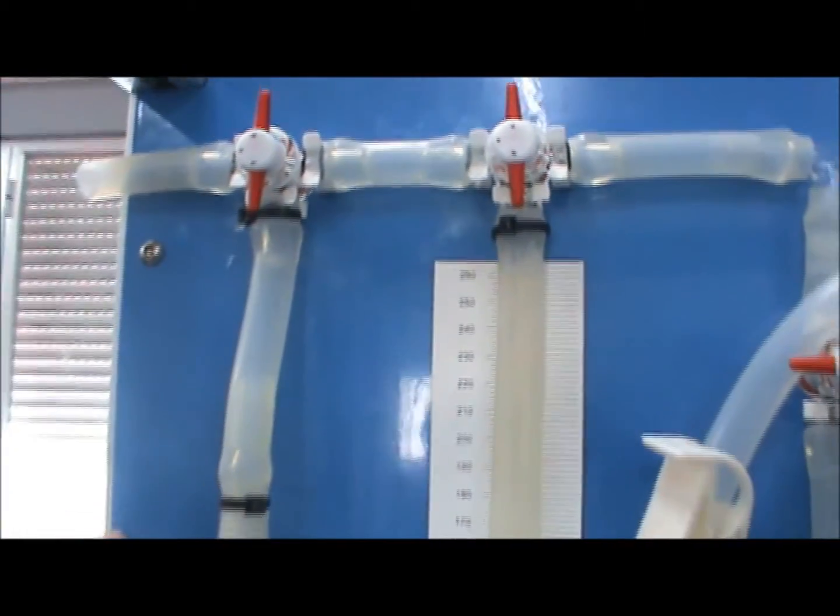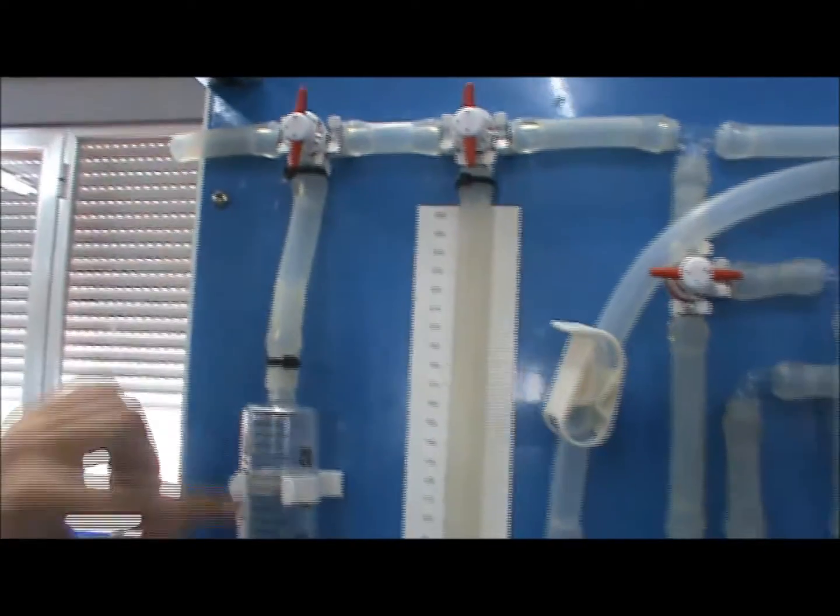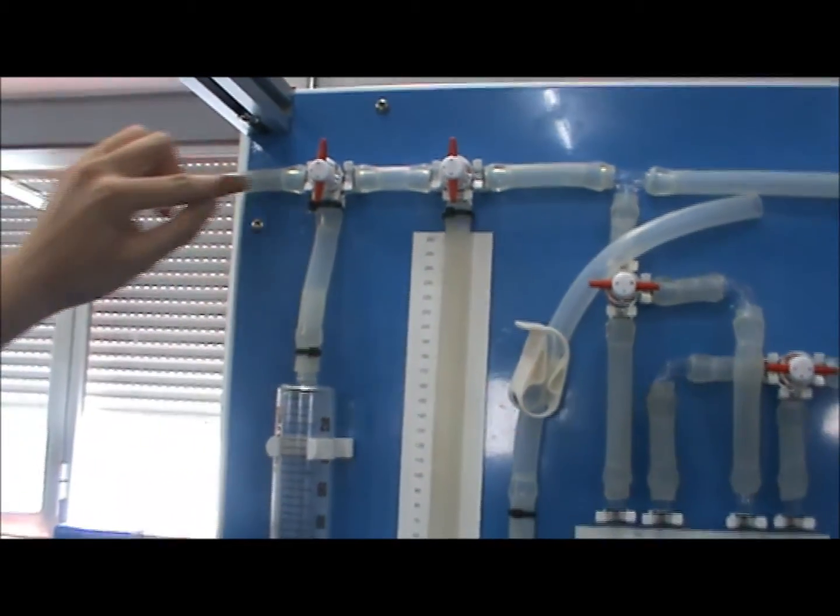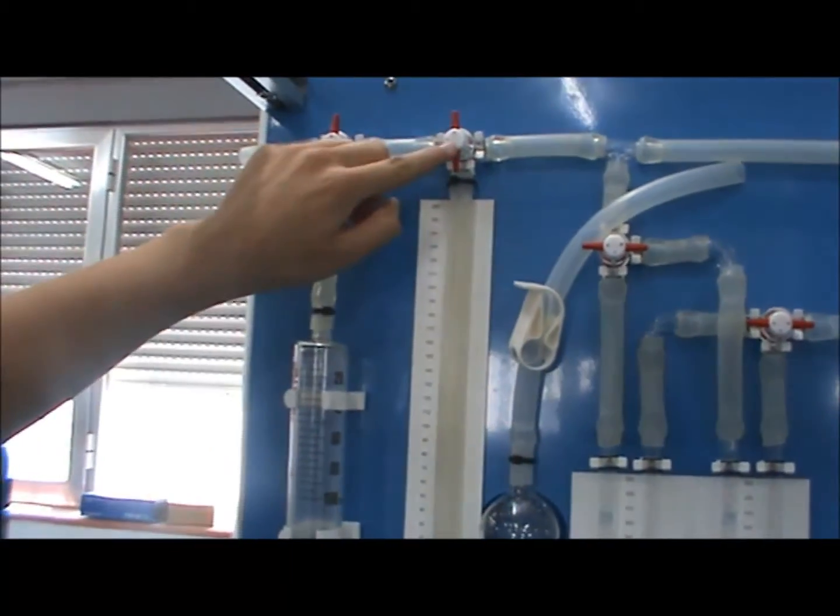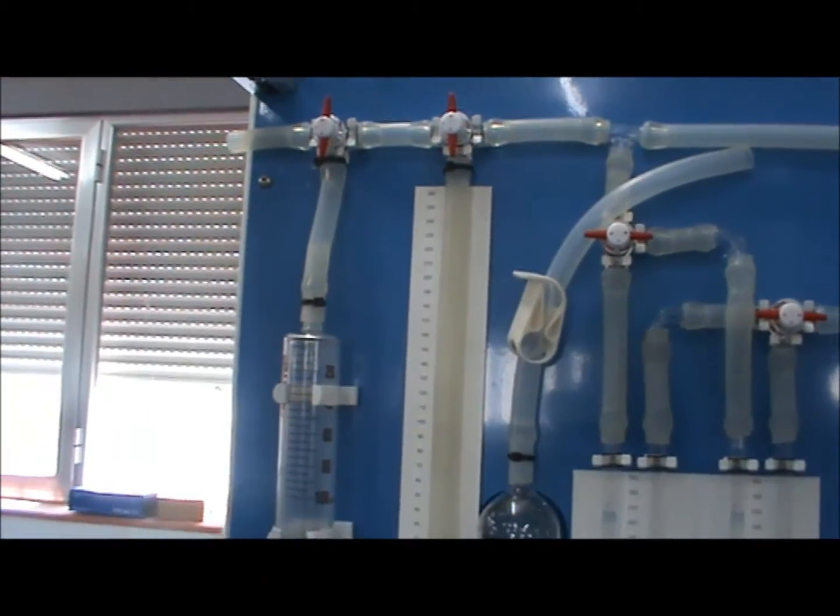Arrange valve VT3 to allow air to flow from the syringe to the atmosphere. And arrange valve VT2 to connect to the U-shaped vessels.